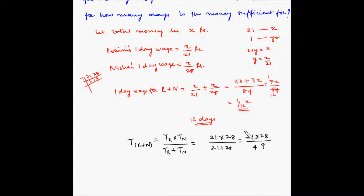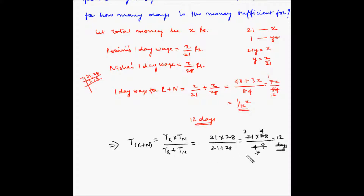Using the formula: total days equals (Rohini's days × Nisha's days) divided by (Rohini's days + Nisha's days). That is 21 multiplied by 28, divided by 21 plus 28: 7 threes are 21, 7 fours are 28, giving us 12 days. So this is the faster method to solve this example.